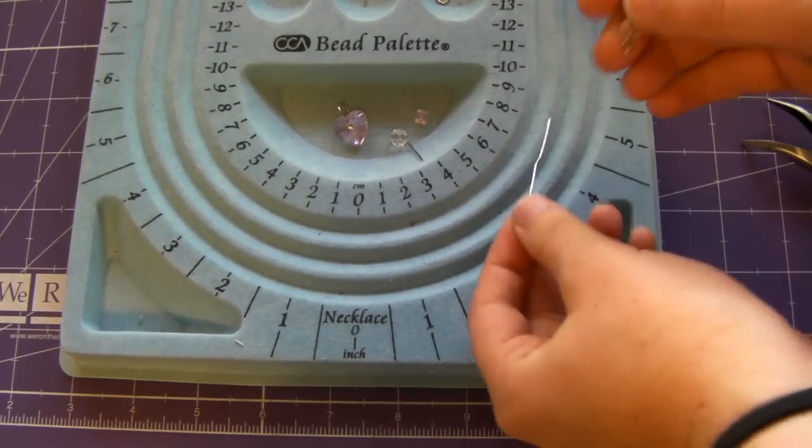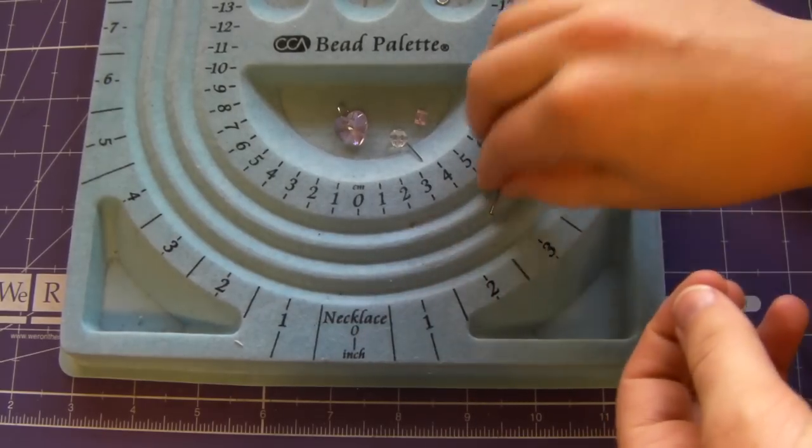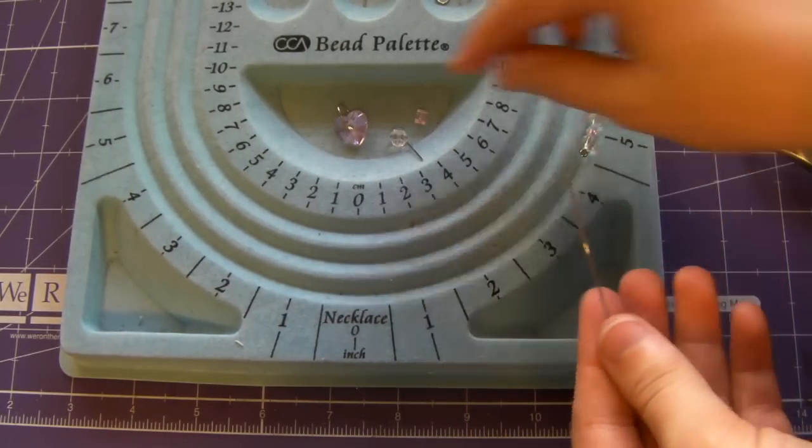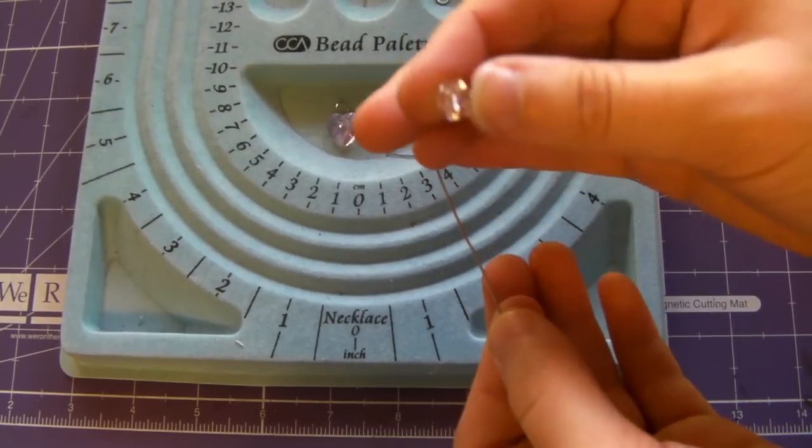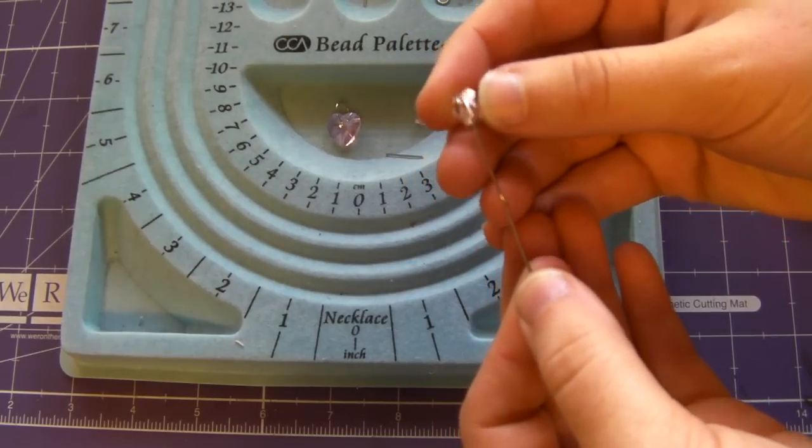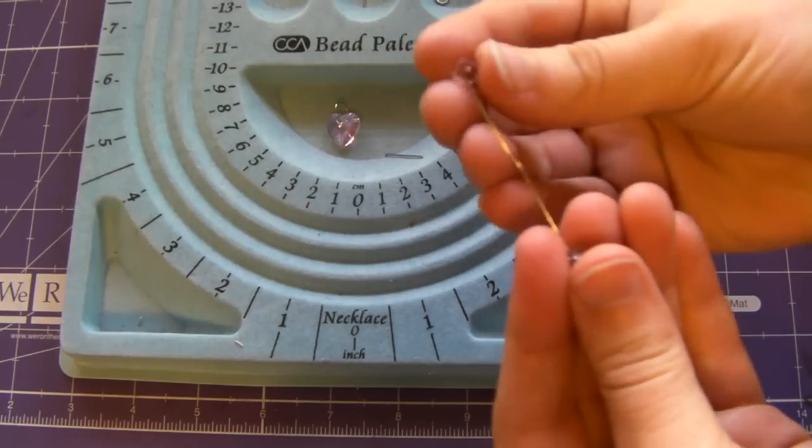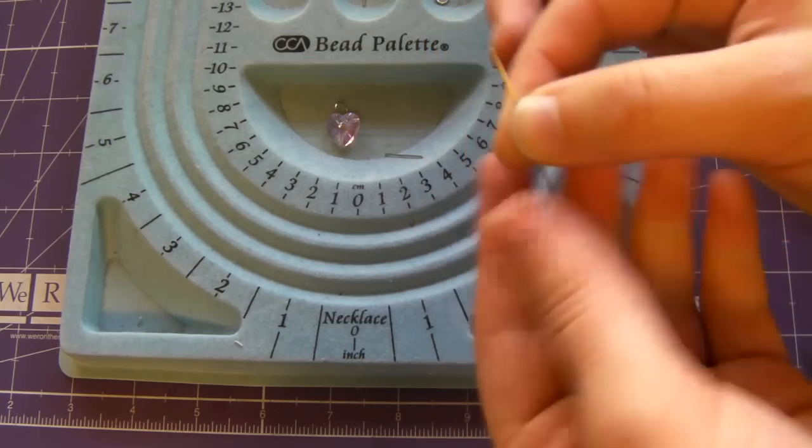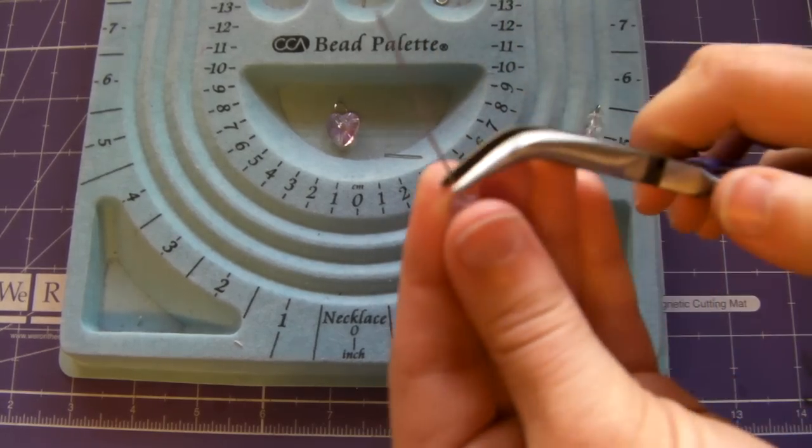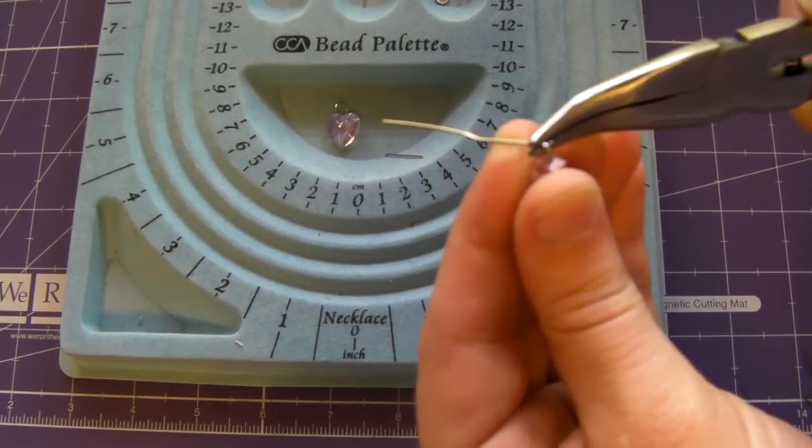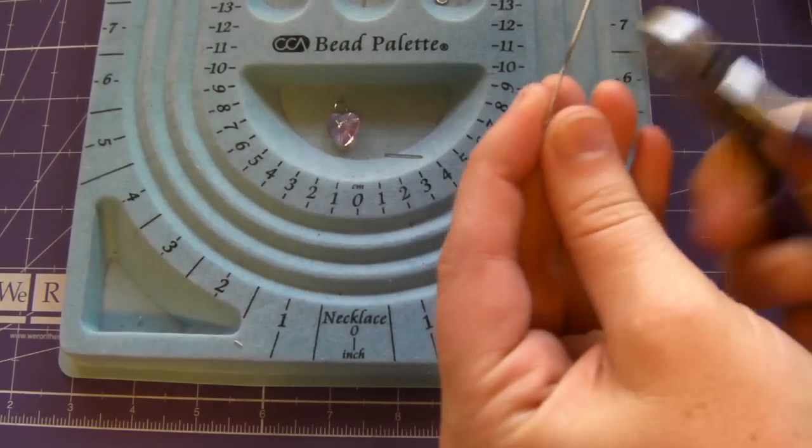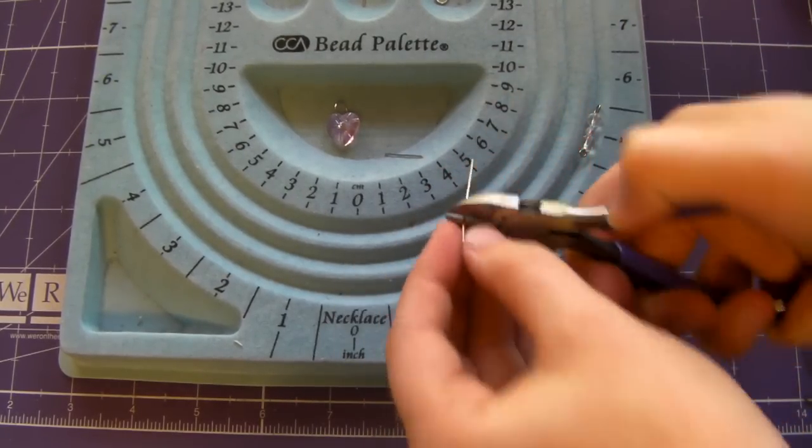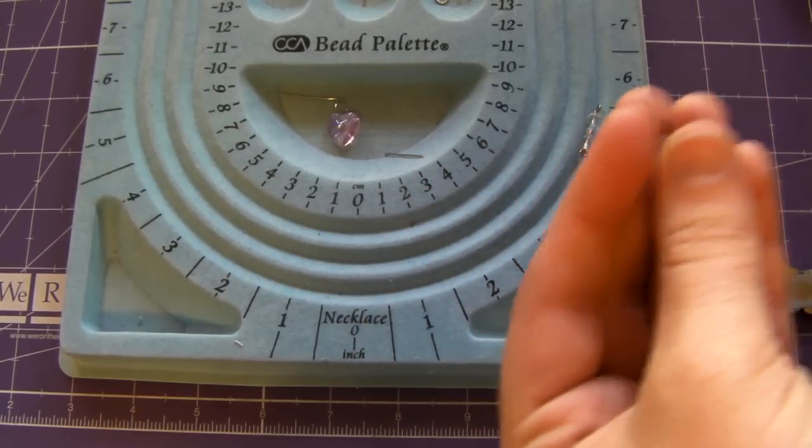So there's your first part. Your second part, this is going to be the top part. The bottom part you want to have the head pin. So you're going to string on your beads. I'm going to have this little weird shaped clear bead. And then I'm going to take my square pink bead. That's all you need. Then you're going to bend it at a 90 degree angle again. Cut about half an inch down from the actual bend.